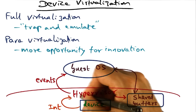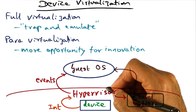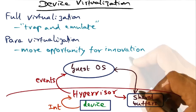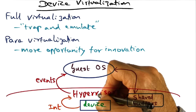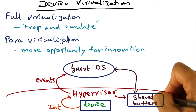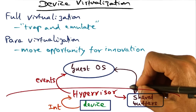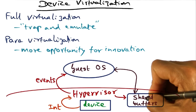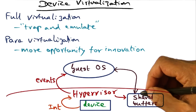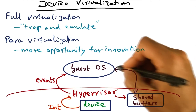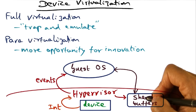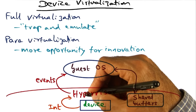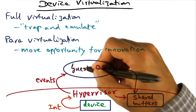For one thing, it is possible for the hypervisor to come up with clean and simple device abstractions that can be used by the para-virtualized operating system. Further, through APIs, it becomes possible for the hypervisor to expose shared buffers to the guest operating system so that data can be passed efficiently between the guest operating system and the hypervisor and to the devices, without incurring the overhead of copying data multiple times from one address space into another. Similarly, there can be innovations in the way event delivery happens between the hypervisor and the guest operating system.